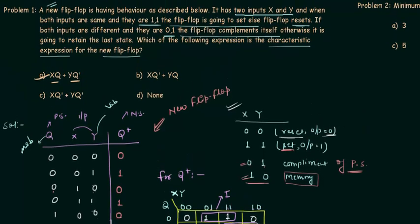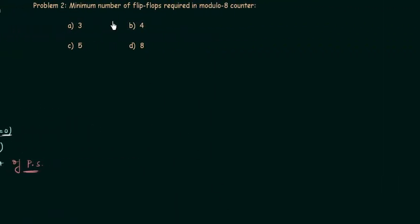So option A is correct for Problem 1. It's an interesting problem — easy, but you have to be careful writing the conditions, otherwise the new flip-flop will behave differently. Moving to Problem 2: the minimum number of flip-flops required in a modulo-8 counter. This is a basic problem — post your answer in the comments. See you in the next one.